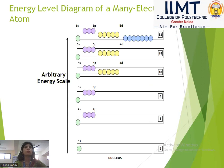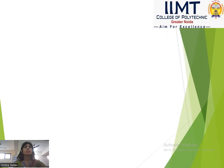We have discussed this before. The series for maximum electrons per shell is: 2, 8, 8, 18, 18, 32.